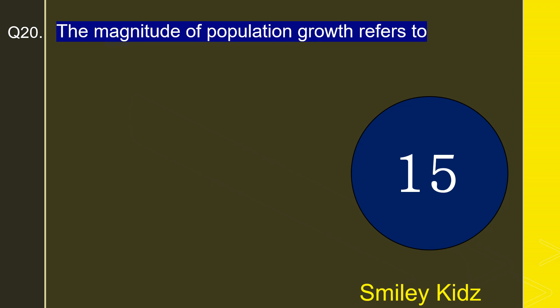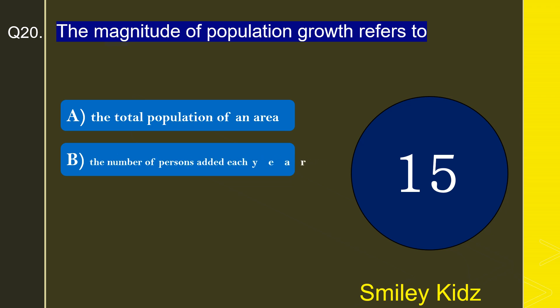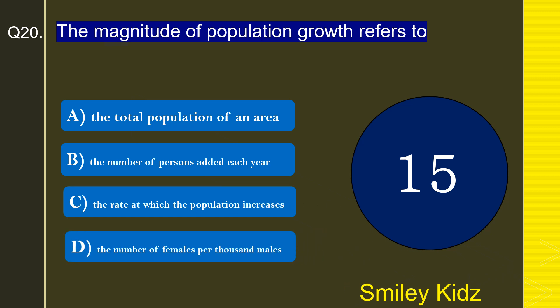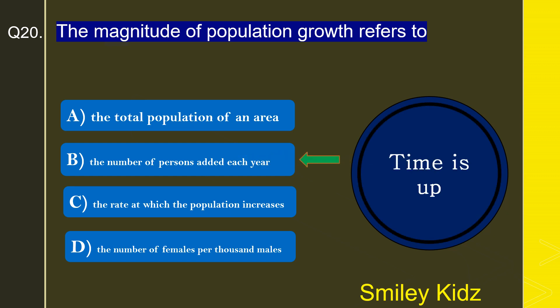Moving to the last question, number 20: The magnitude of population growth refers to — the total population of an area, the number of persons added each year, the rate at which the population increases, or the number of females per thousand males? The correct answer is the number of persons added each year. The magnitude of population growth refers to the number of persons added each year.